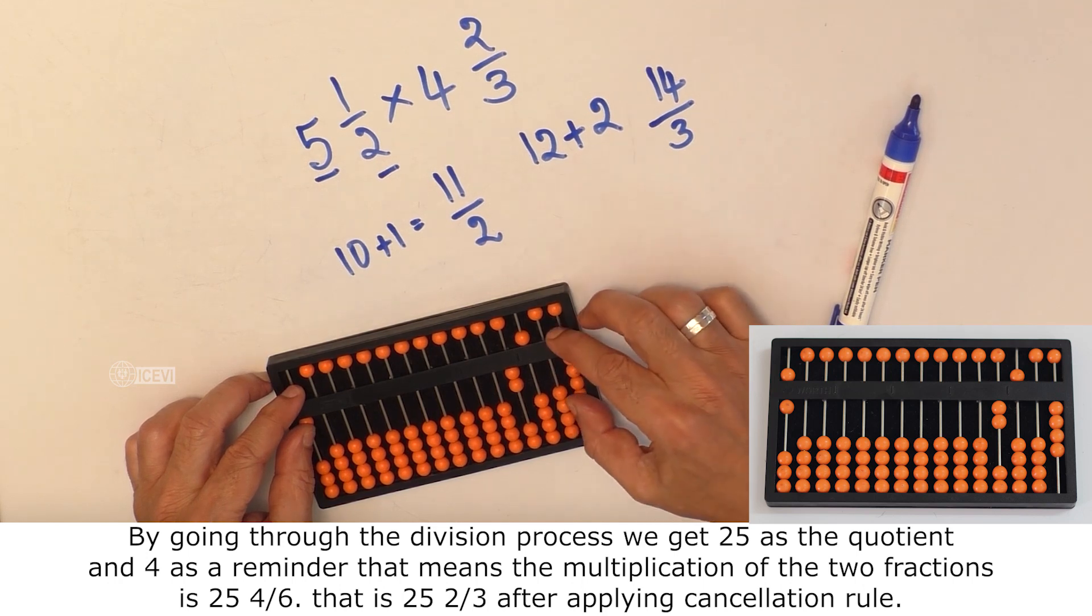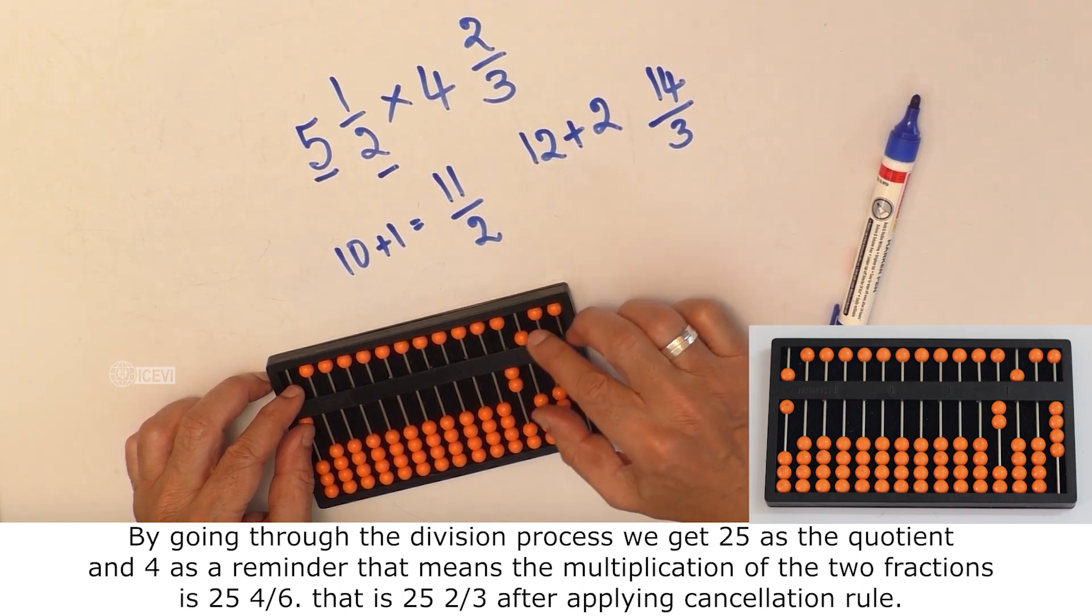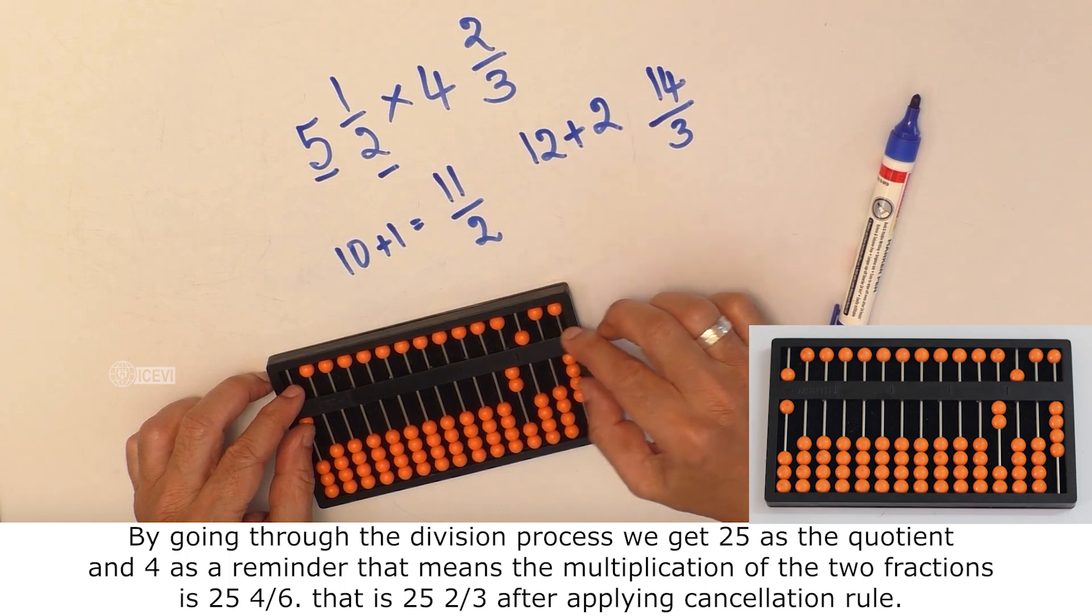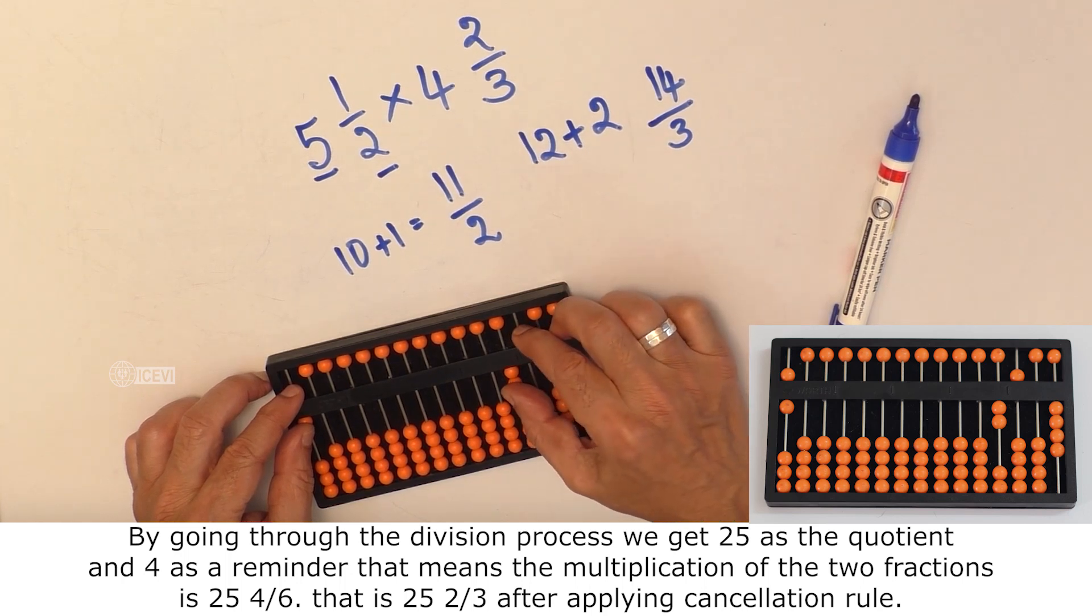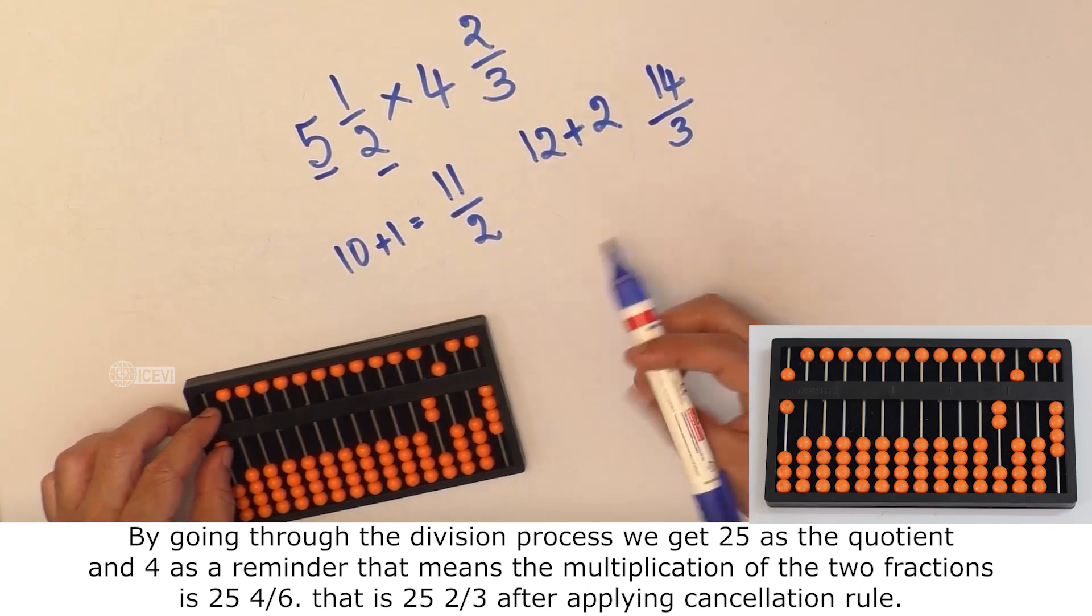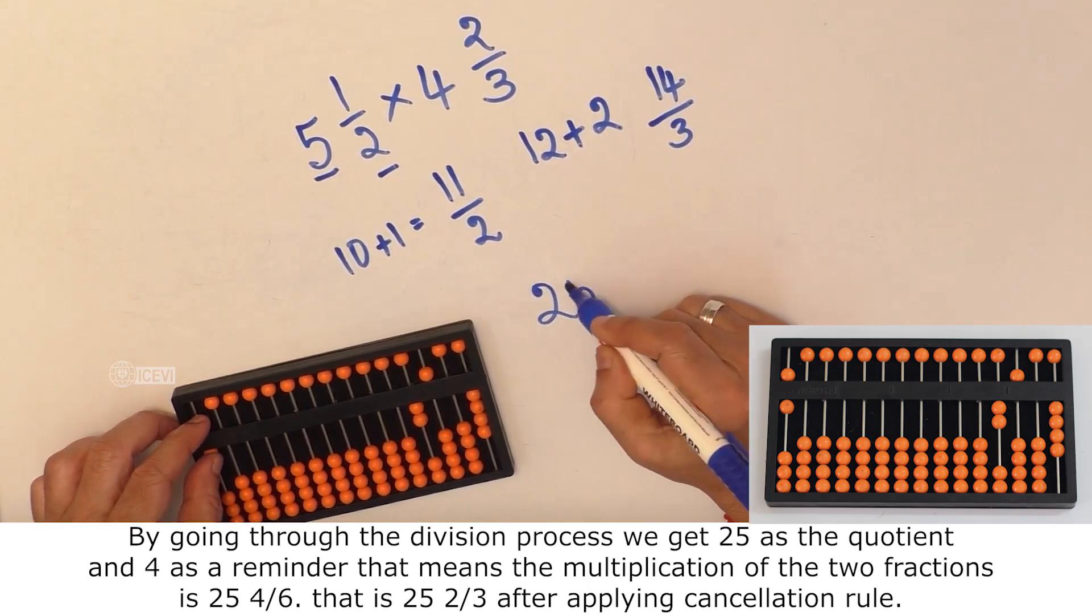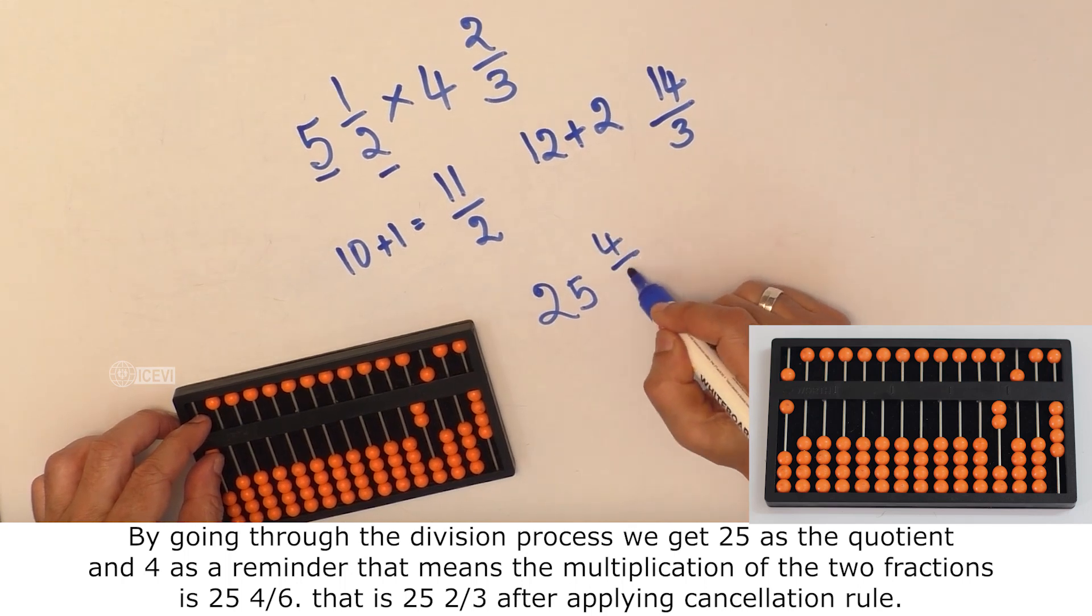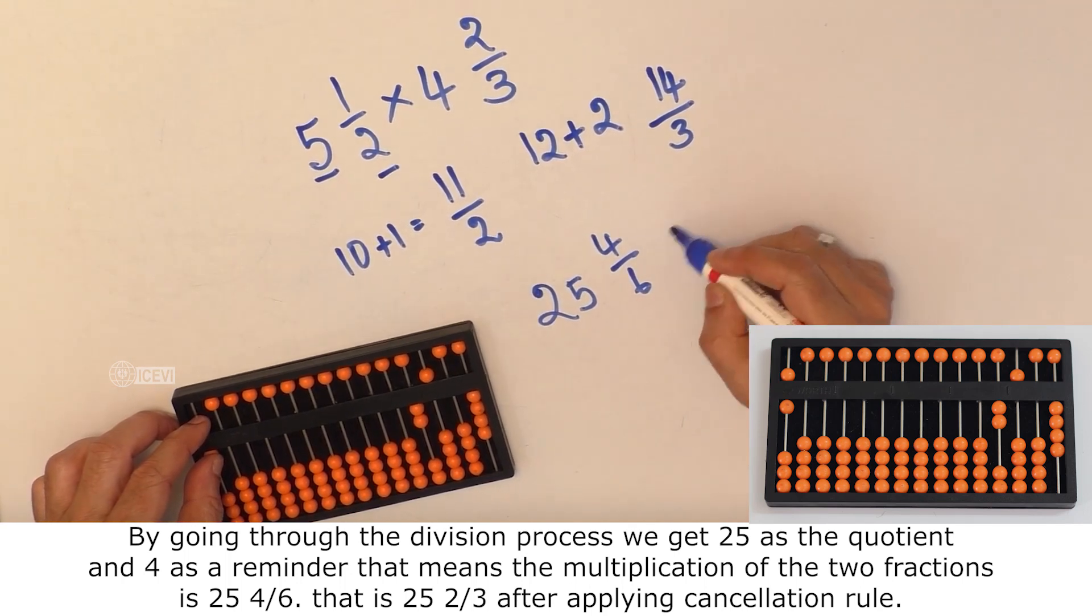That means the multiplication of the 2 fractions is 25 4/6, which is 25 2/3 after applying the cancellation rule.